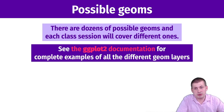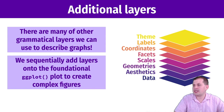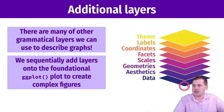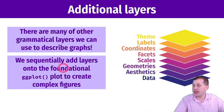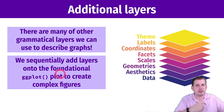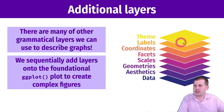We have those three layers — data, aesthetics, and geometries — but that's not all the Grammar of Graphics lets us do. We actually get a whole sandwich of layers that describe how plots are made. We can keep sequentially adding layers with the plus sign: functions that change the scales, change the facets, add labels, and change the theme. We'll talk about each of these additional layers.